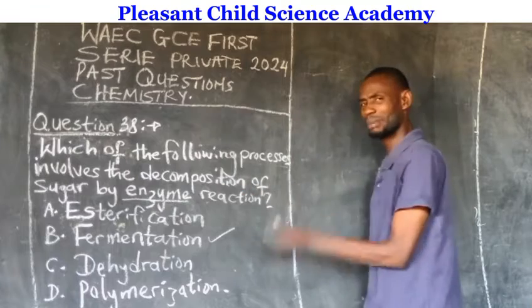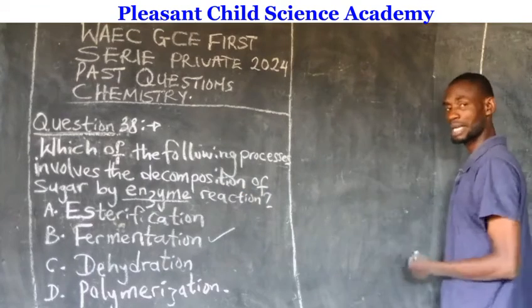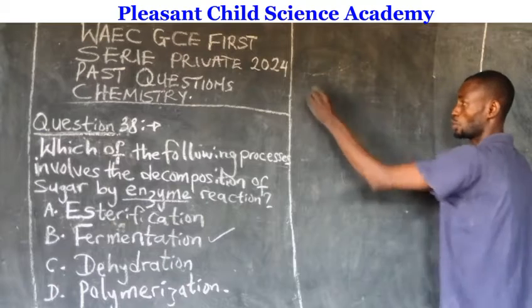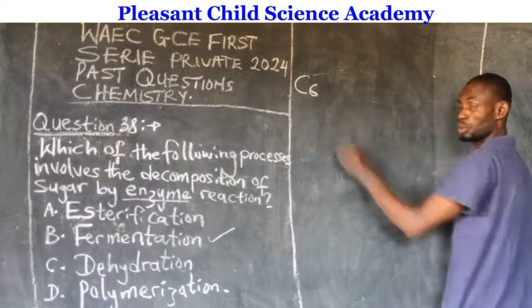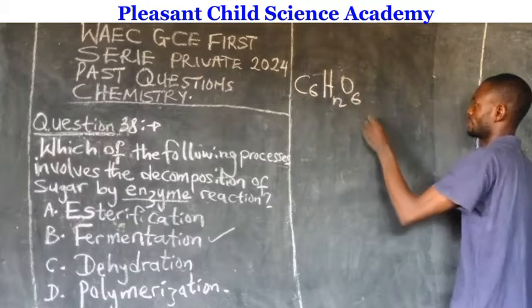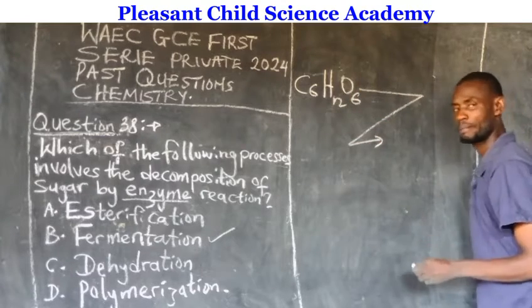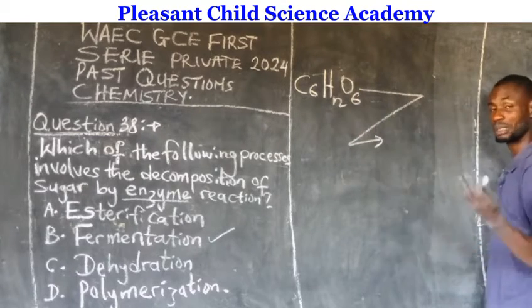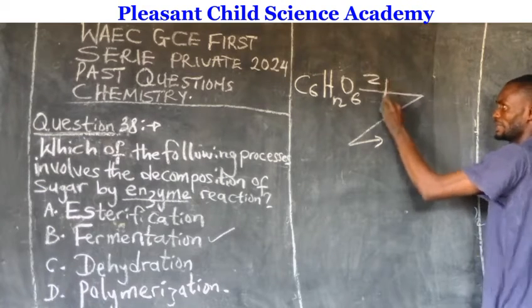It is the enzyme that will decompose the sugar. What is the chemical equation for the fermentation reaction? The formula for sugar is C₆H₁₂O₆. The enzyme will decompose this sugar.